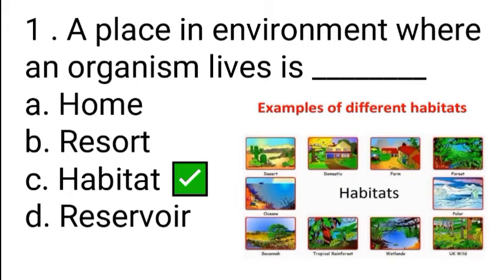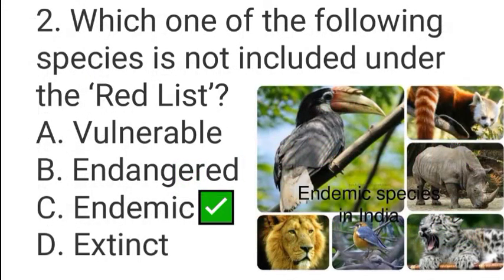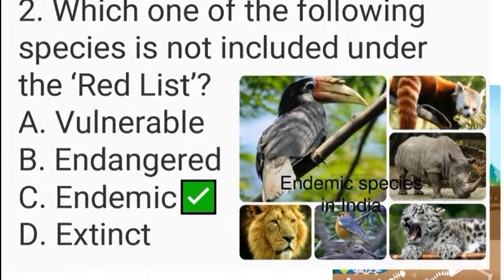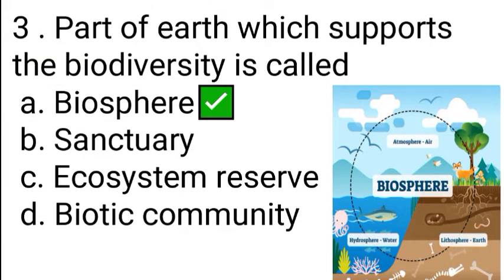A place in the environment where an organism lives is called a habitat. Examples of different kinds of habitats are given. Which one of the following species is not included under the Red List? The part of Earth which supports biodiversity is called the biosphere.